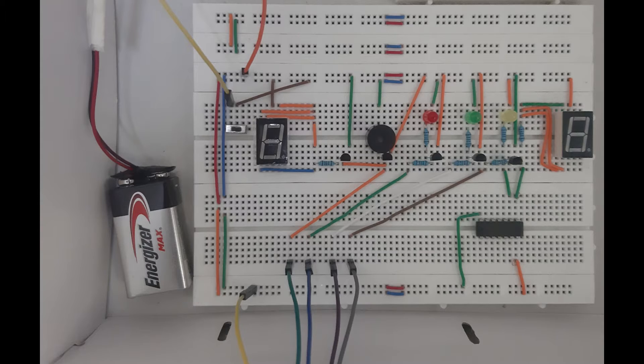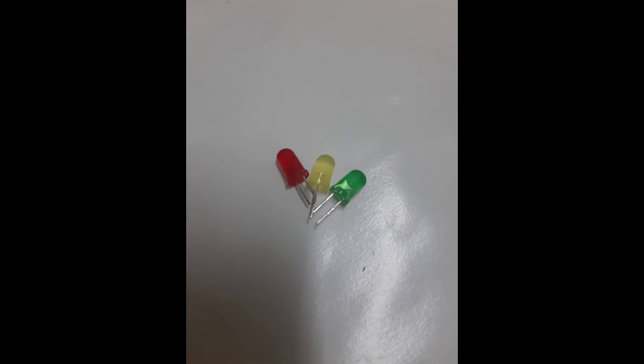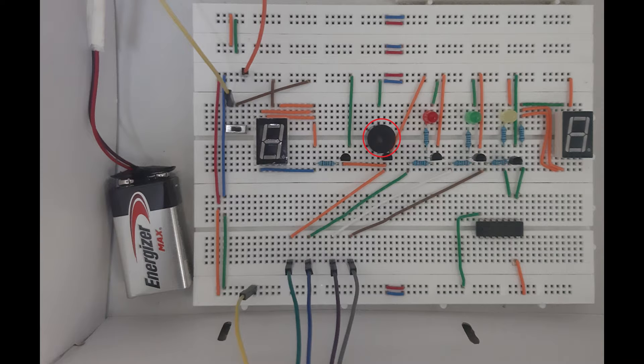Components used are the following: two pieces of seven segment display, five pieces NPN transistors, eight pieces 220 ohms resistors, three pieces LED lights, one piece buzzer, one piece 9 volts battery.